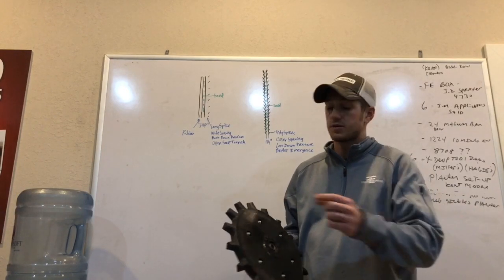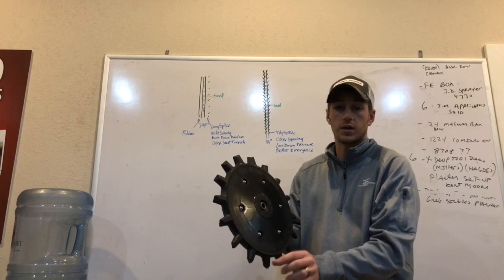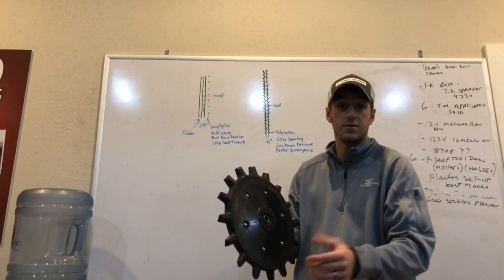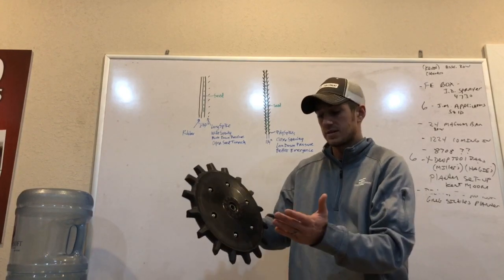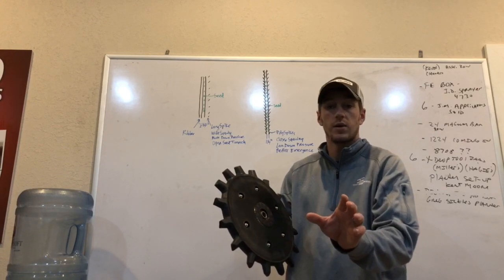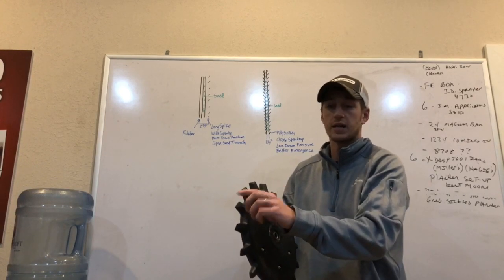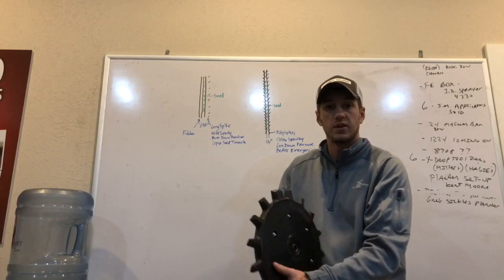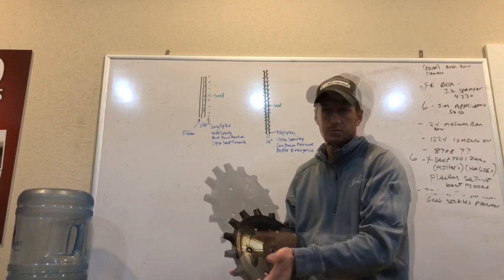In the past, our long spikes, we've had to space out two and three quarters of an inch and maybe even further. What happens then is, and the reason why we had to space them out is because the spikes were long and if we got them too close, they would flip every seed out of the trench that we just put in.